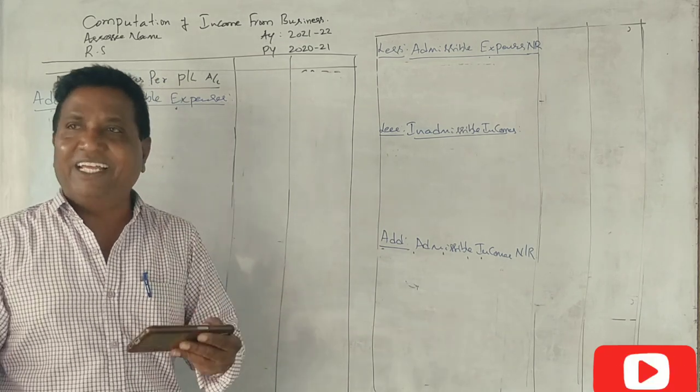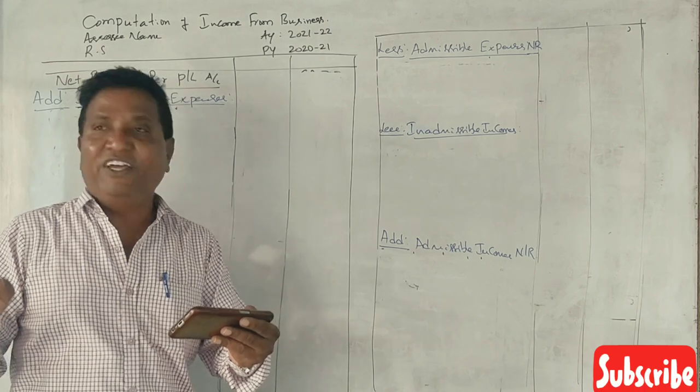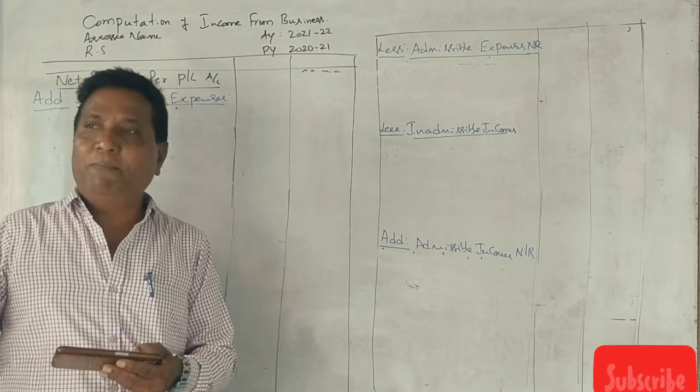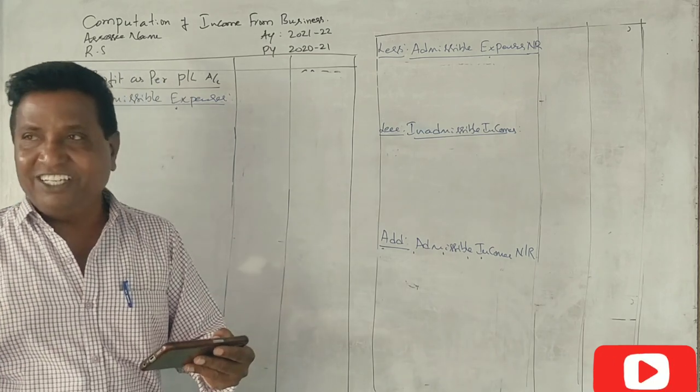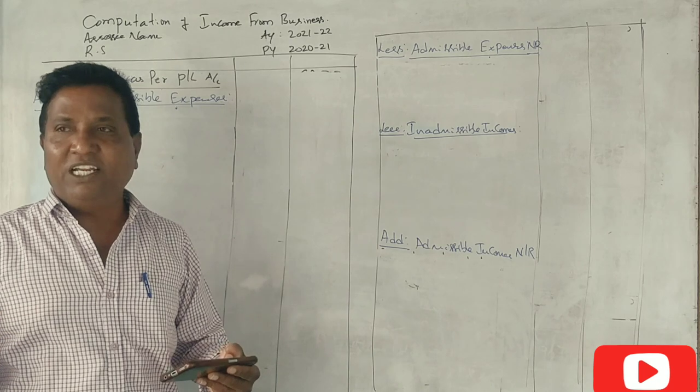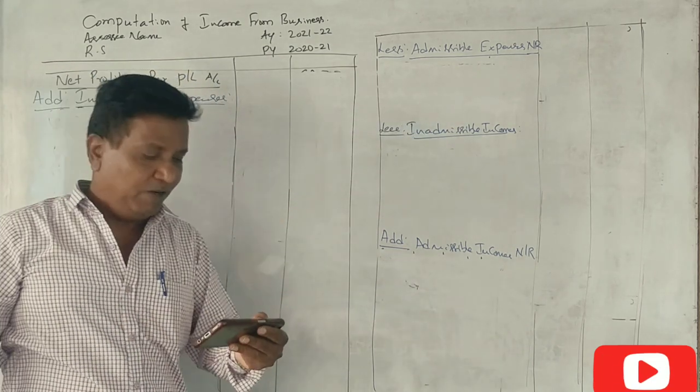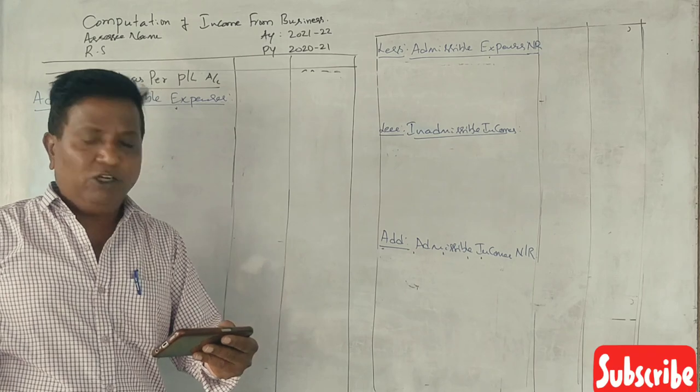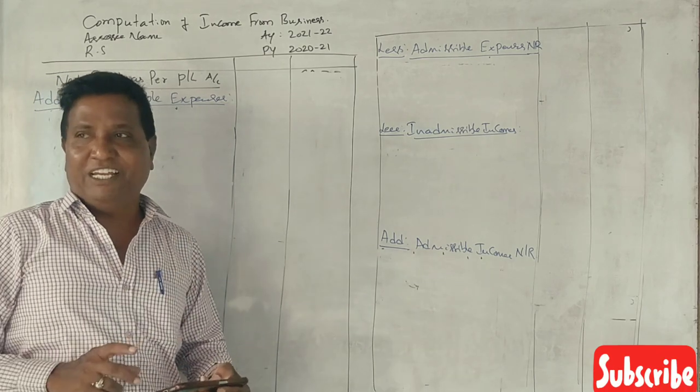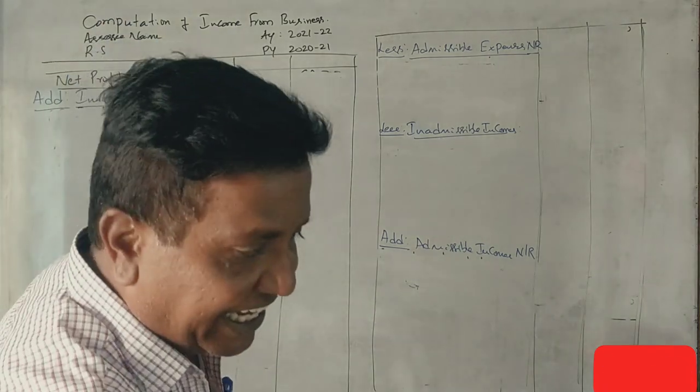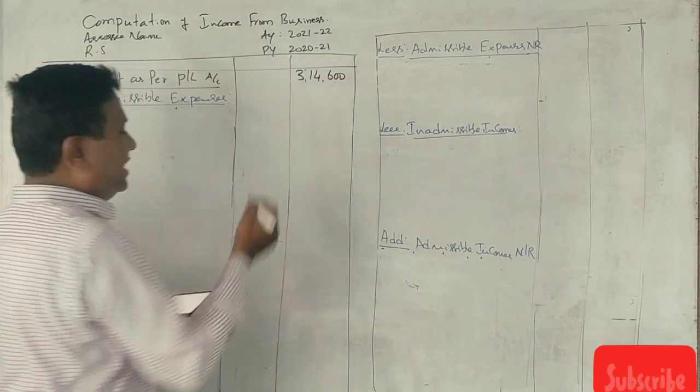Motor car, 5,500 rupees purely private. The repairs include 2,750 of a residential house. Other expenses include household expenses. Allowable depreciation is 18,000. Other expenses include 2,000 related to household expenses. Net profit is 2 lakh 14,000. So the adjustments.